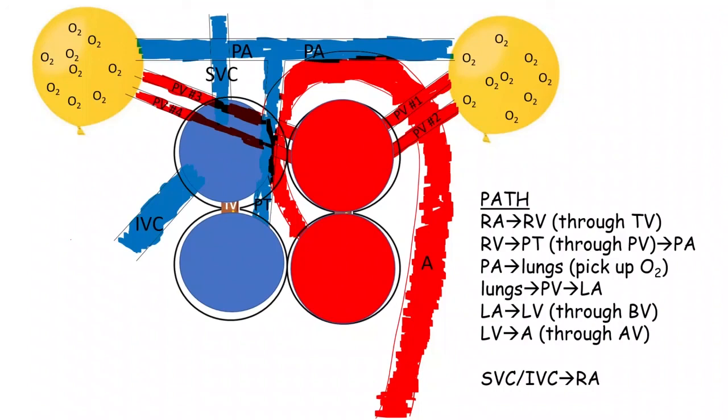After going around the world two times, we come back to the heart. Think about what we've done: we started at the right atrium, the blood followed the pathway through the heart, then out to the lungs, then we brought the blood back to the heart, and then we sent the blood around the world, and now it comes back to the heart. That's a pretty amazing journey that the blood travels throughout the body.